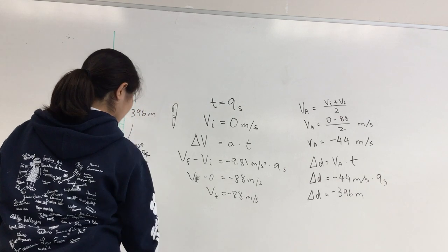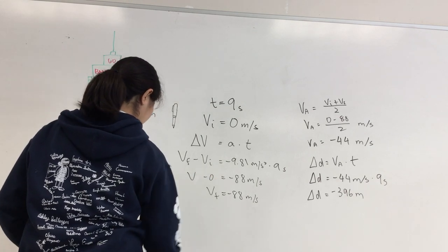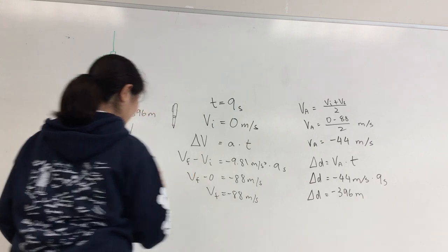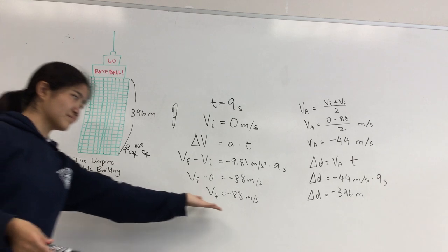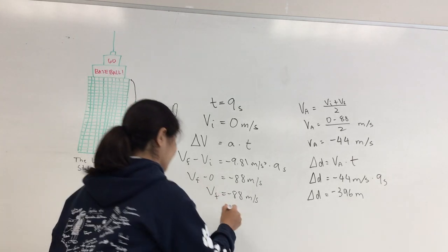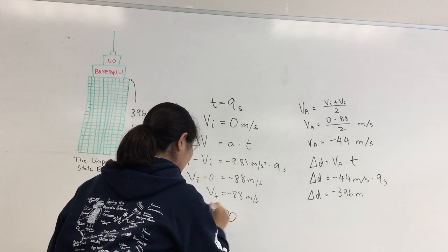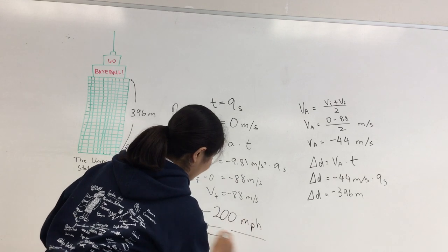Now we can answer the question as to why so many people died. Because the pen traveled at negative 88 meters per second, which is about 200 miles per hour, and the shape of the pen hurtled towards the ground like a missile, it penetrated people's skulls.